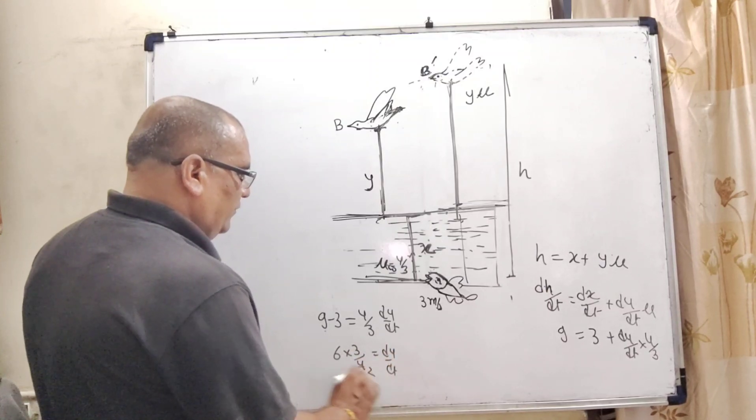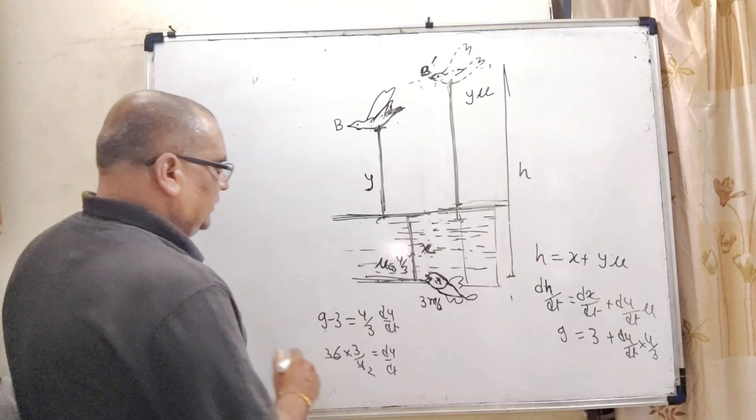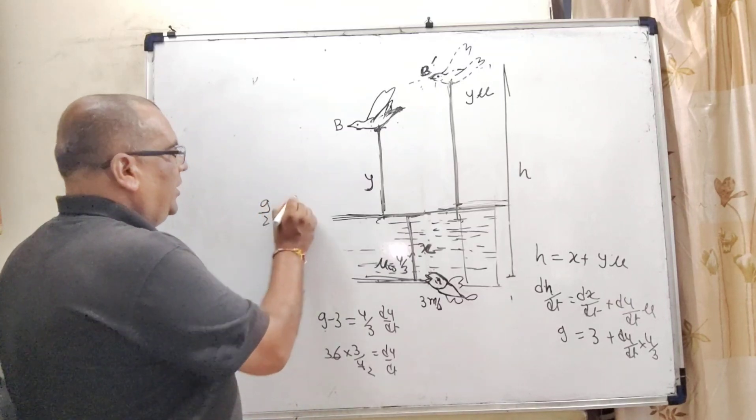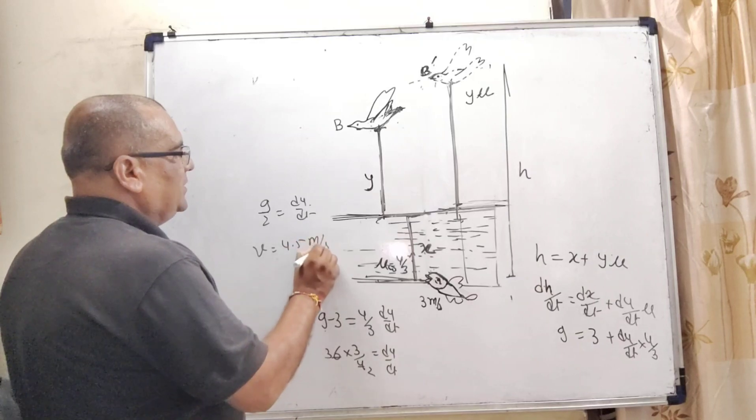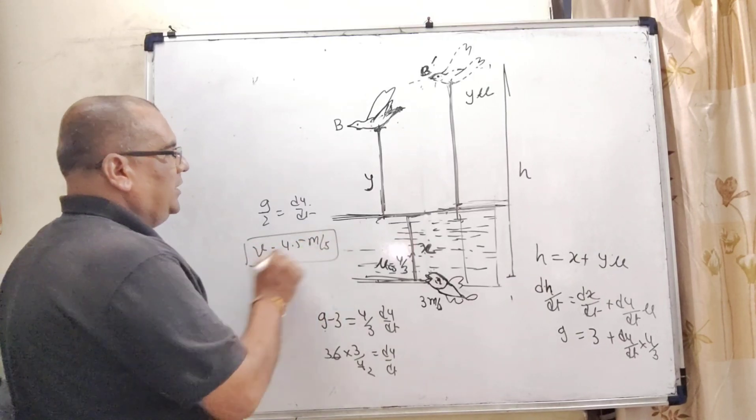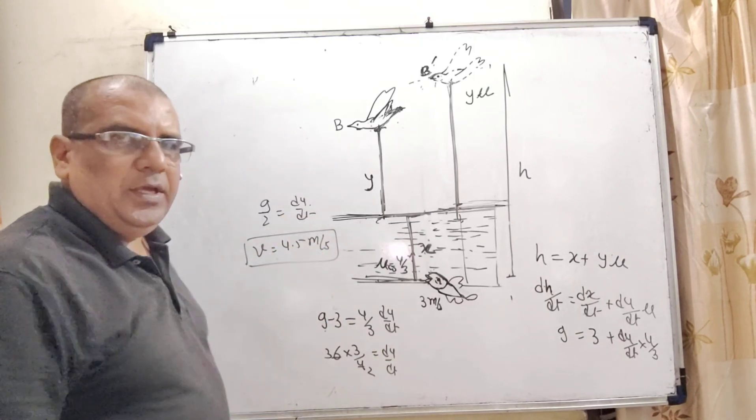So, 2 to the 4, 2 to the 6, 3 to the 9 by 2 dy/dt, or this velocity is equal to 4.5 meter per second. Actual velocity of this bird.